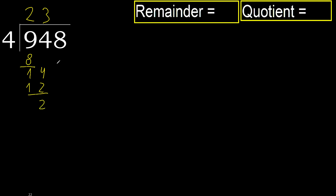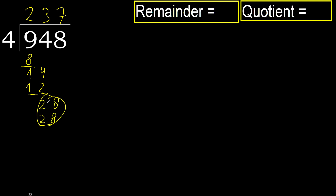Subtract. Next: 28. 4 multiplied by 8 is greater. Multiply by 7 is 28, which is not greater. Okay. Subtract. Next.